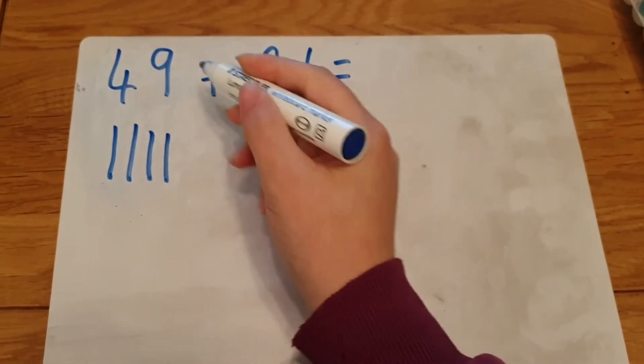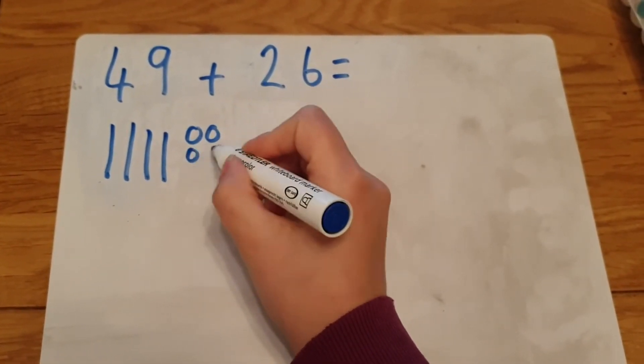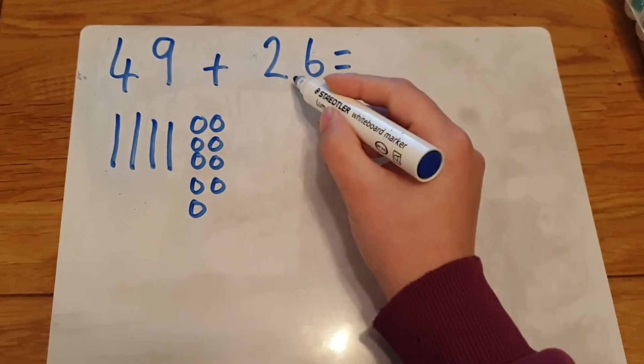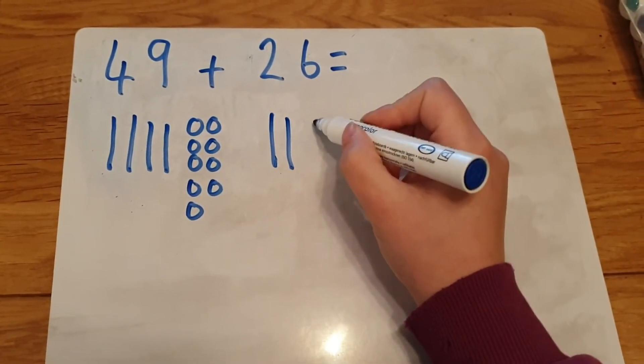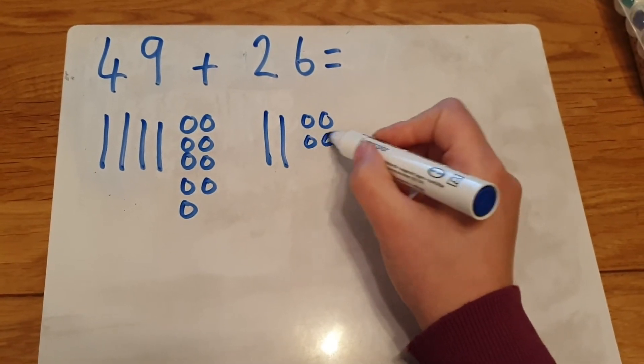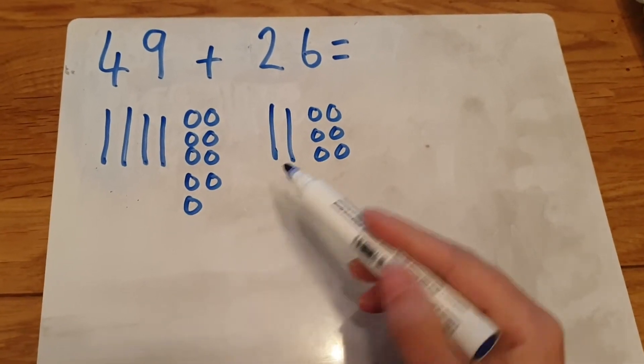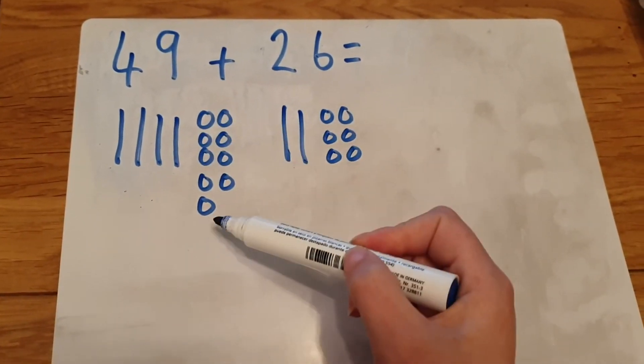Four tens and nine ones for 49. Two tens and six ones for 26. Now I can see that my ones digits are more than nine because there is already nine here.